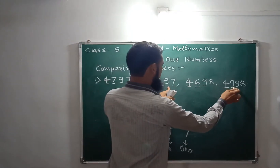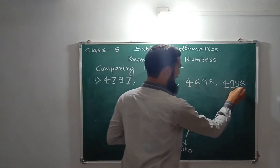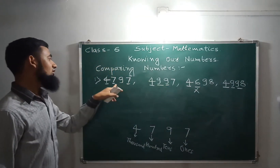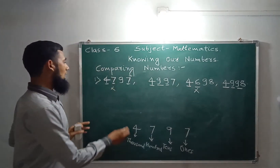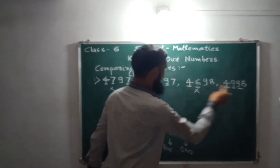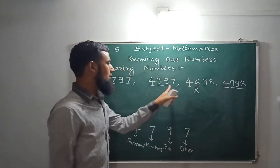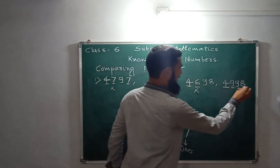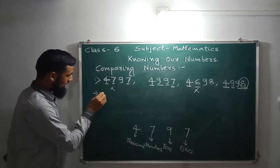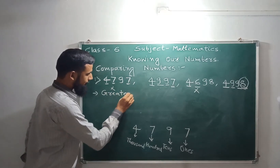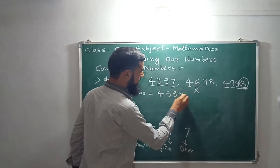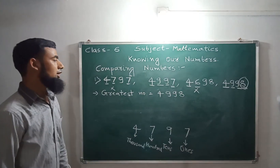So 7 and 6 are eliminated because they are smaller than 9. We compare only the two numbers with 9 in the hundreds place. Both have 9, so we move to the ones place: 7 and 8. Eight is bigger. So the greatest number is 4,998.